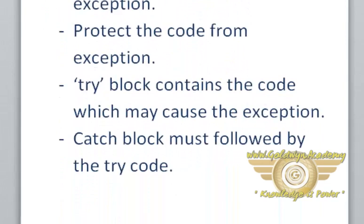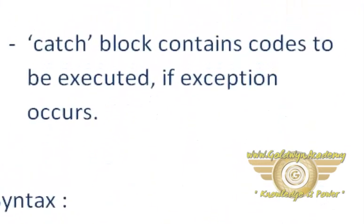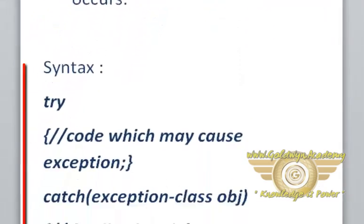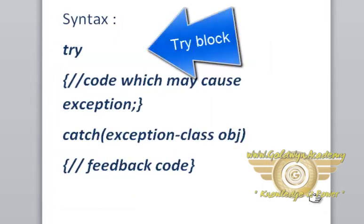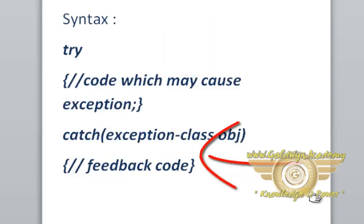The try block contains the code which may cause the exception. The catch block must follow the try block. The catch block contains code to be executed if an exception occurs. Here is the syntax of try and catch block. In the try block there is code which may cause an exception. Catch takes a parameter as an exception class and object. In its body there is feedback code if any exception occurs.